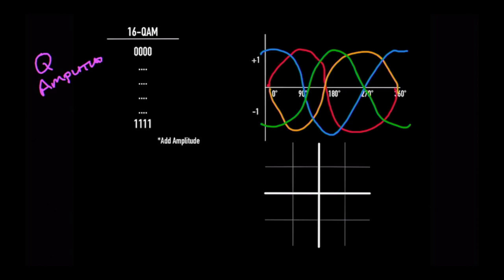But now we have the ability to not only have a 45 degree something here, we have another 45 degree one low and one high. We've added amplitude into the situation. Now we have a total of 16 possible combinations. Each is sending four bits.